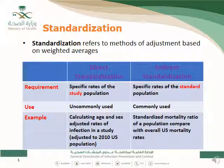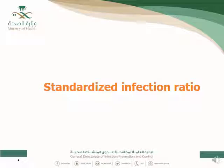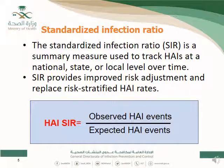To do indirect standardization, you need a standard population with different age groups and a death rate for each age group. Then you standardize your study population or hospital patients to that standard population based on the distribution of age groups in the hospital population. For standardized infection ratio and utilization ratio, it is the same concept: observed events over expected events.